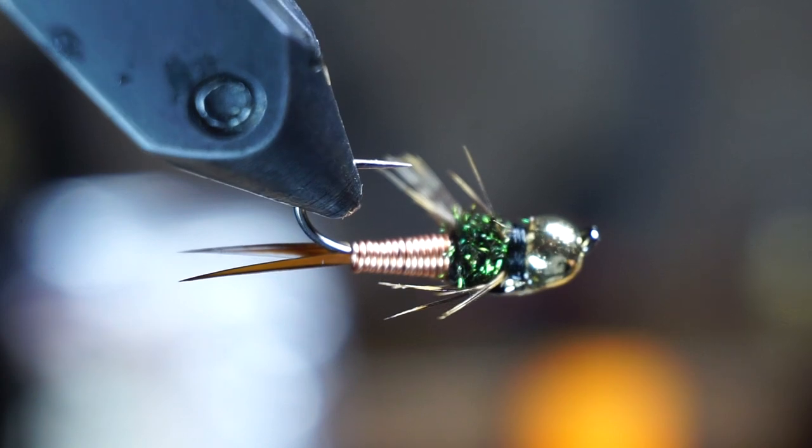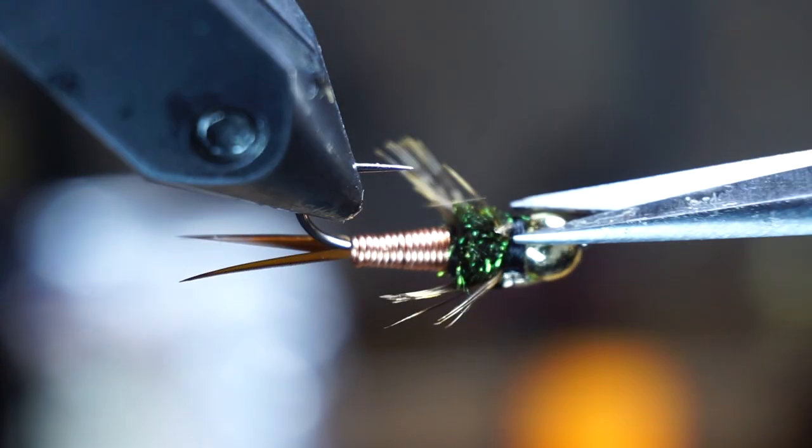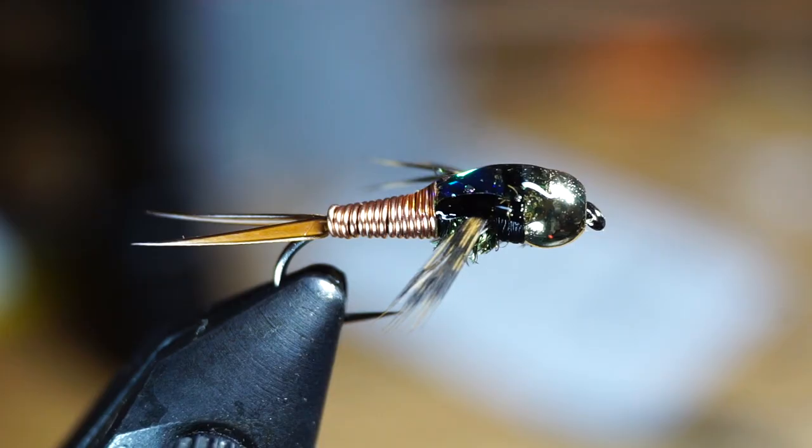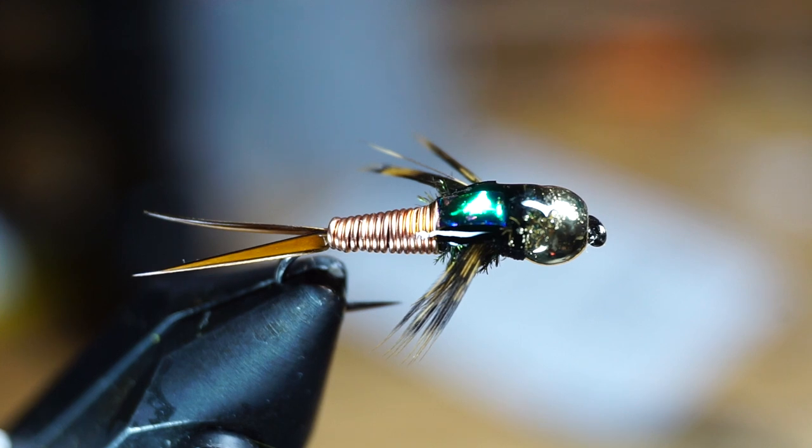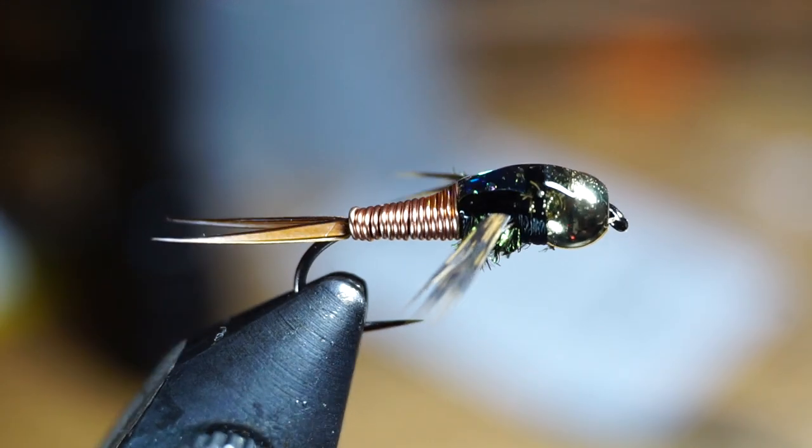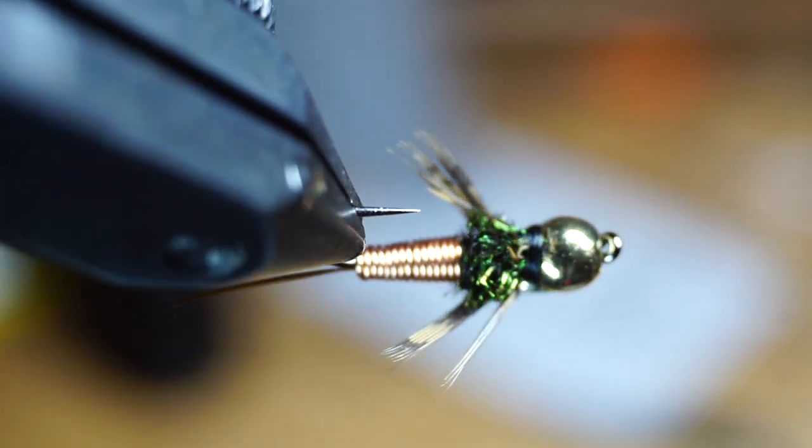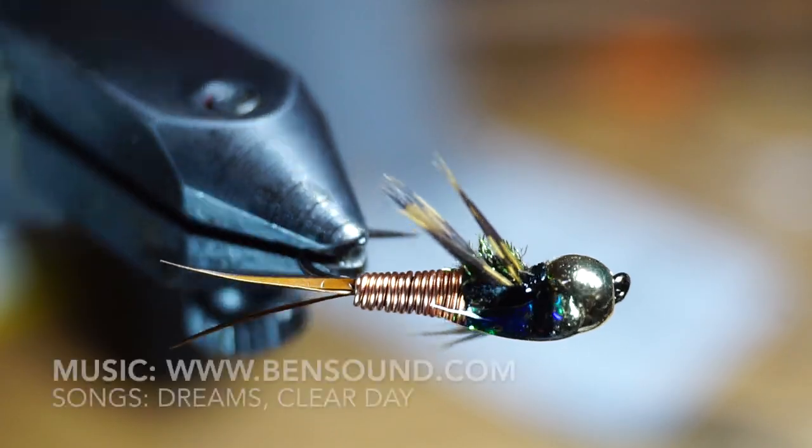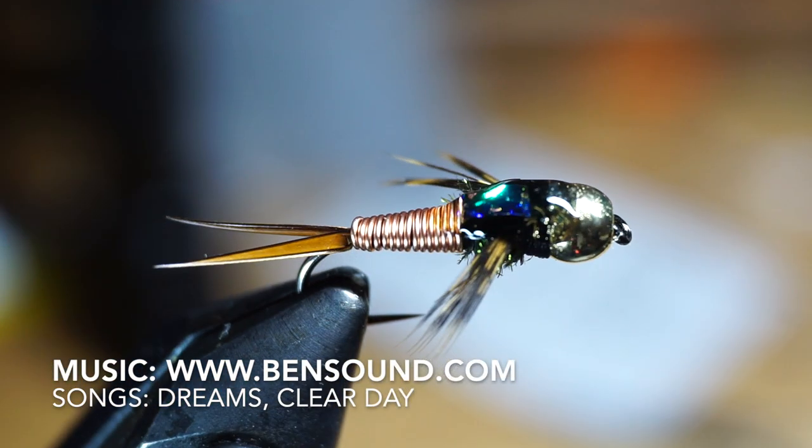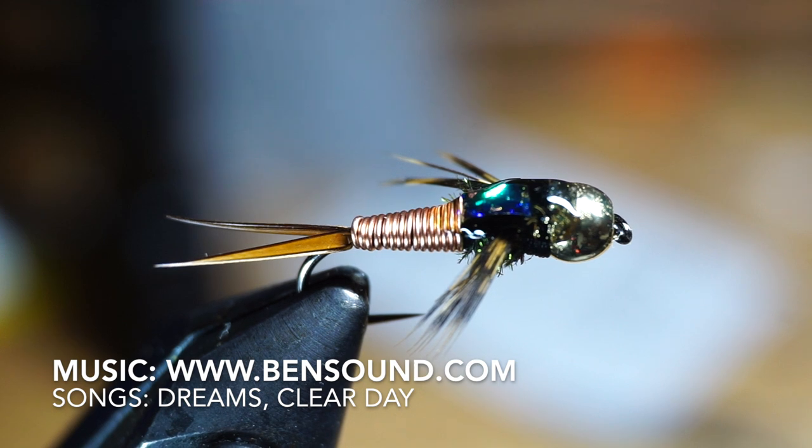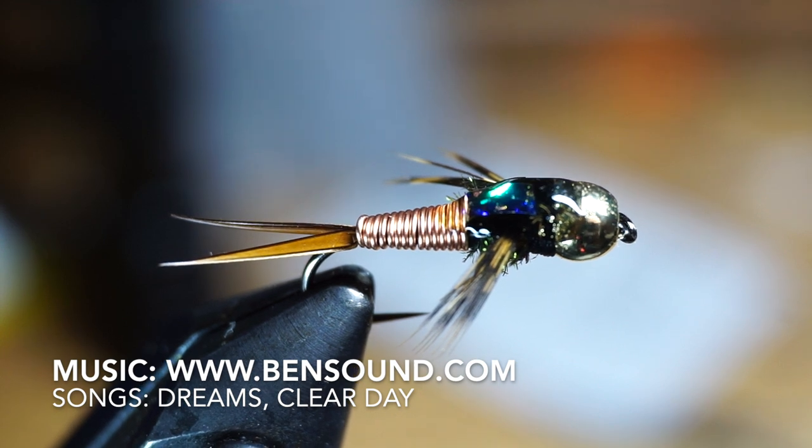Like always, if you have any errant fibers, just clip them off to make the fly look pretty. But as you can see, that mess up with the scud back is almost not visible anymore. That UV resin really covers up any imperfections. So don't overthink this fly. I mean it's a flashy attractor pattern that sinks quickly. It's fun to tie, and that's how you should look at it. Have fun with it, and it doesn't need to be perfect.